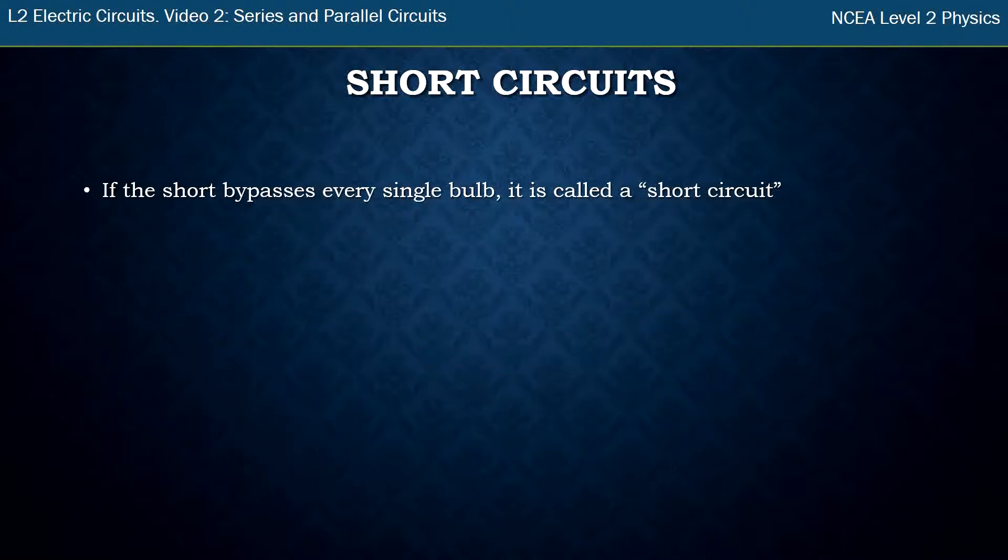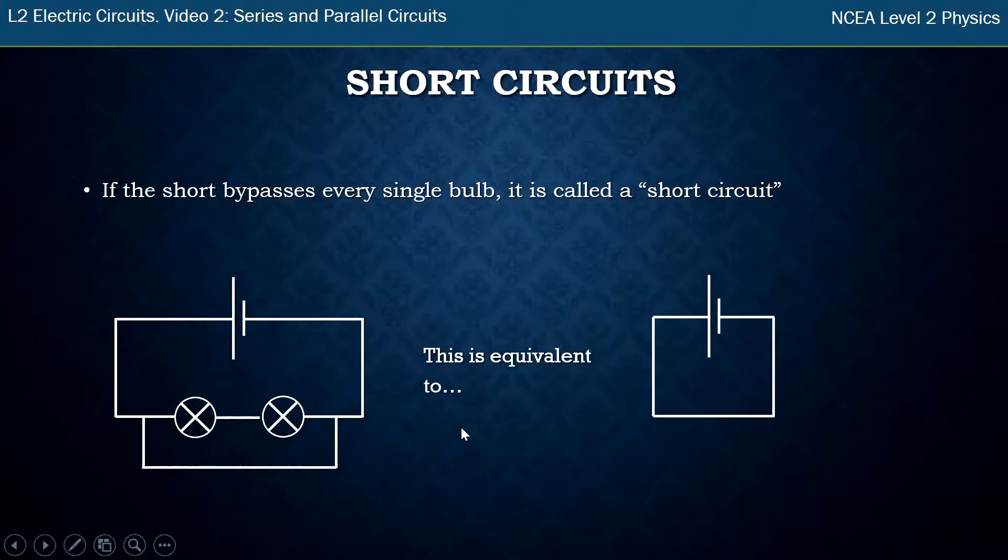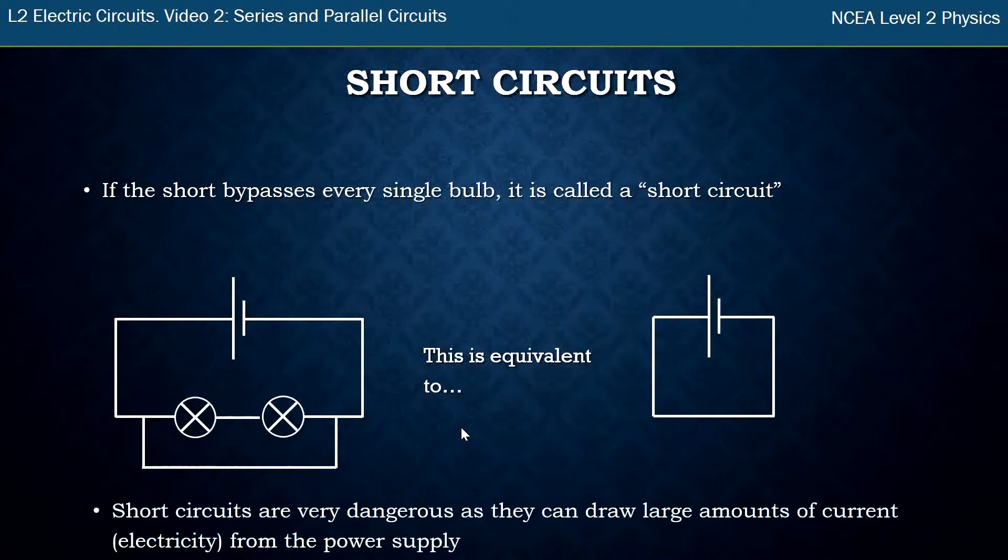If the short bypasses every single bulb in the circuit, we call the whole thing a short circuit. So in this case here we have two bulbs and the wire bypasses everything, electricity bypasses everything here. So that's the equivalent of this circuit, a battery connected to itself. Now this is very dangerous, this short circuit, because they can draw large, large amounts of current and a number of bad things can happen. So if you're ever building circuits, you want to stay away from short circuits.